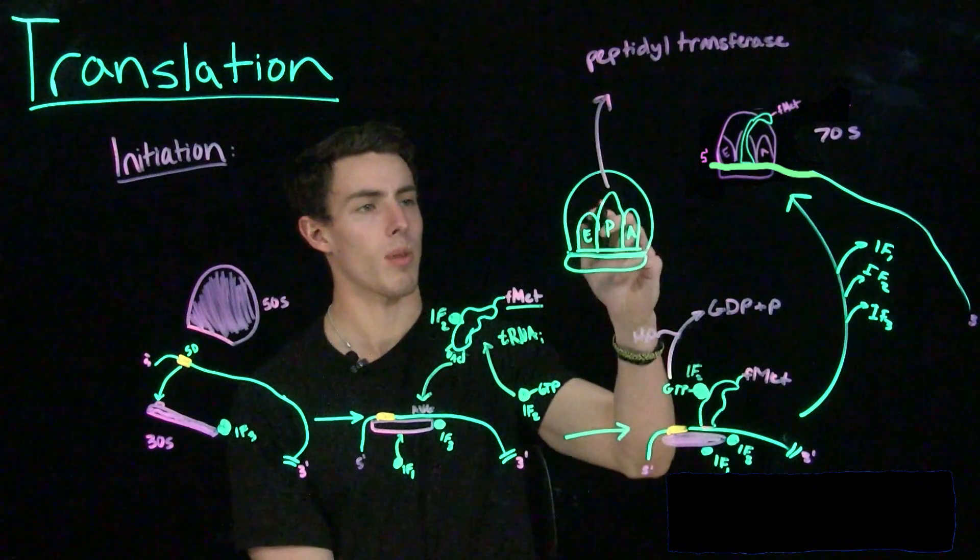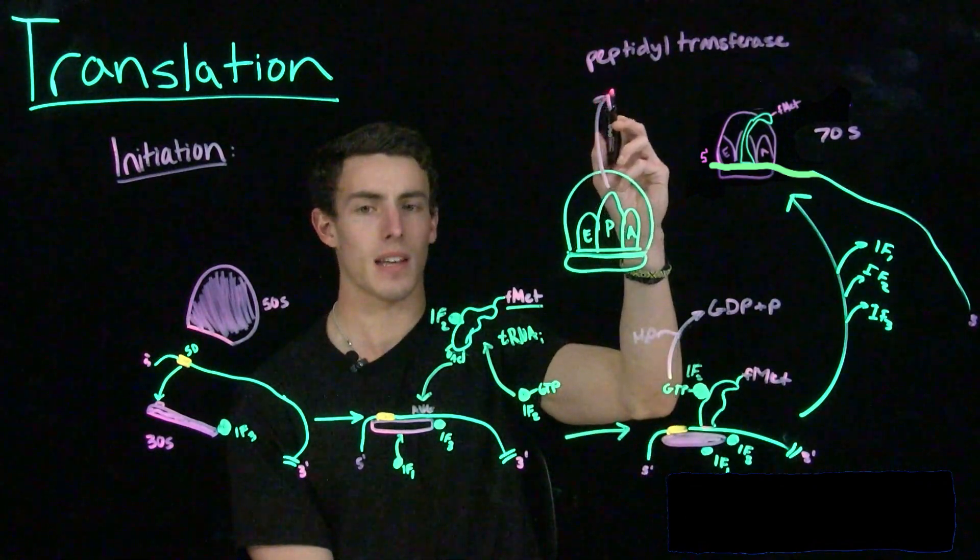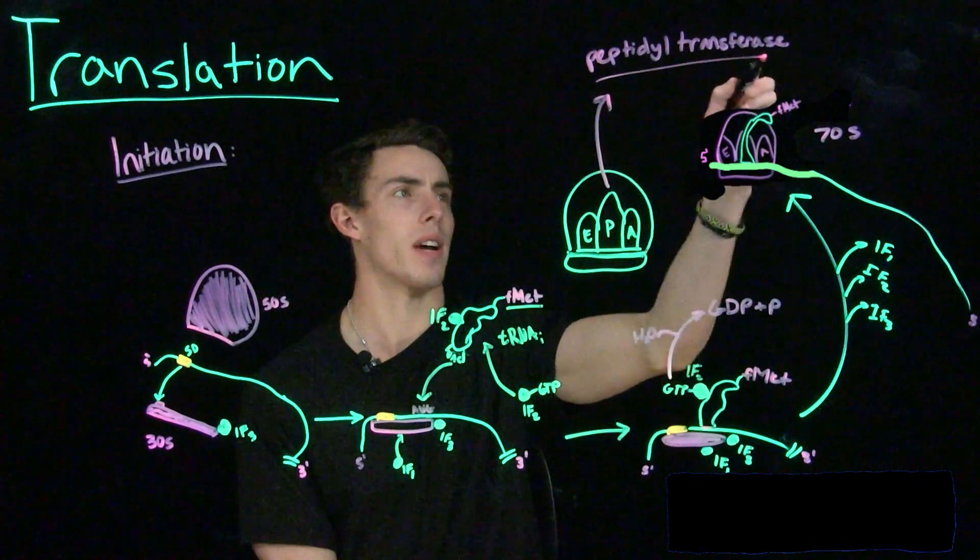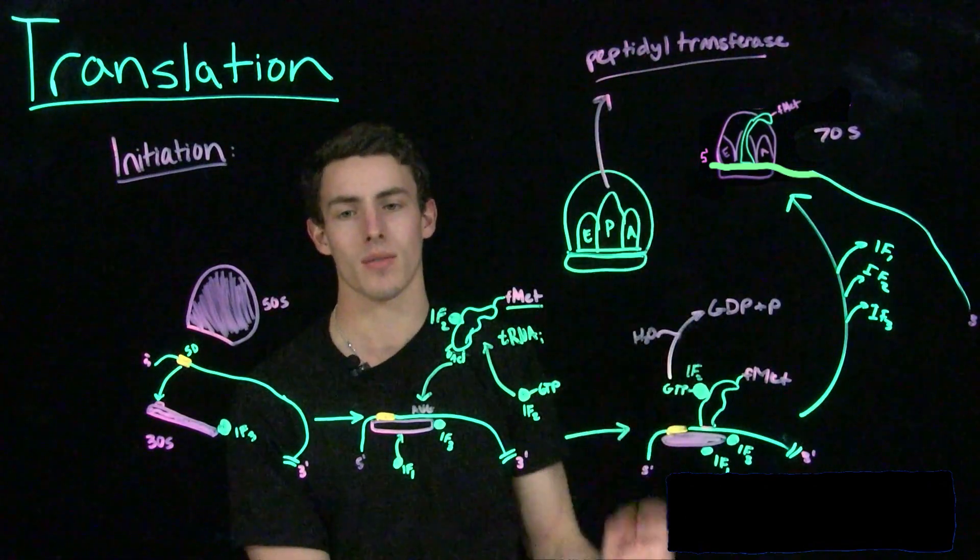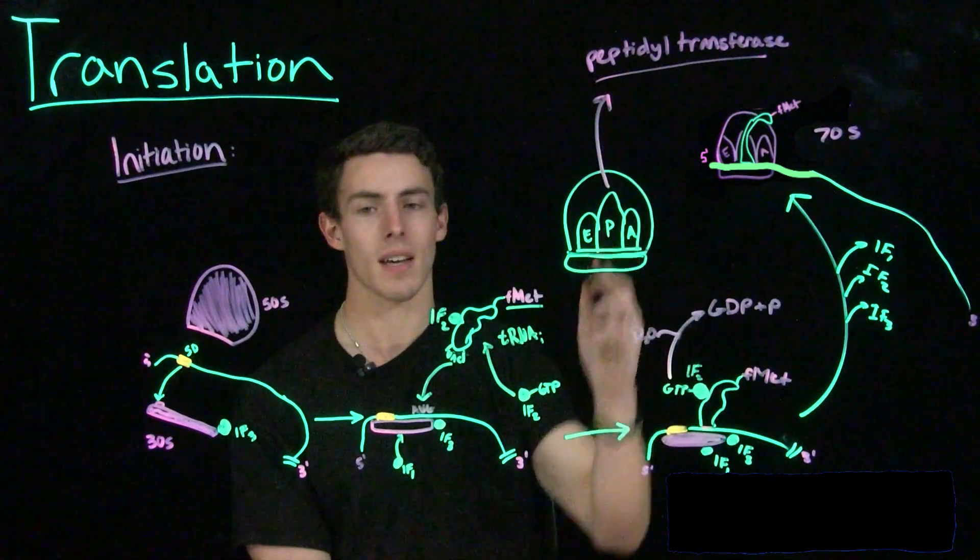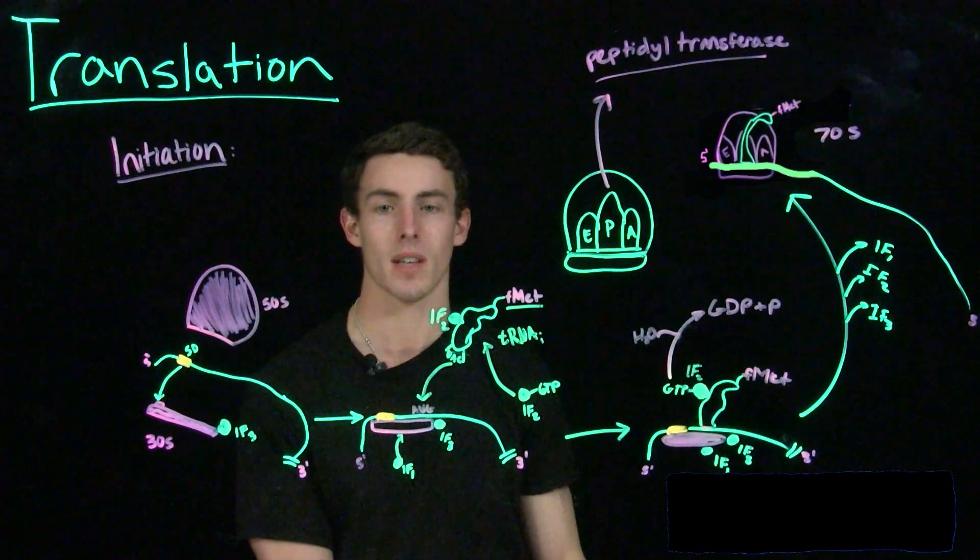One special note about the P site of a ribosome is that it contains a specific enzymatic activity called peptidyl transferase. This peptidyl transferase activity means that this P site is able to actually catalyze the formation of a peptide bond.